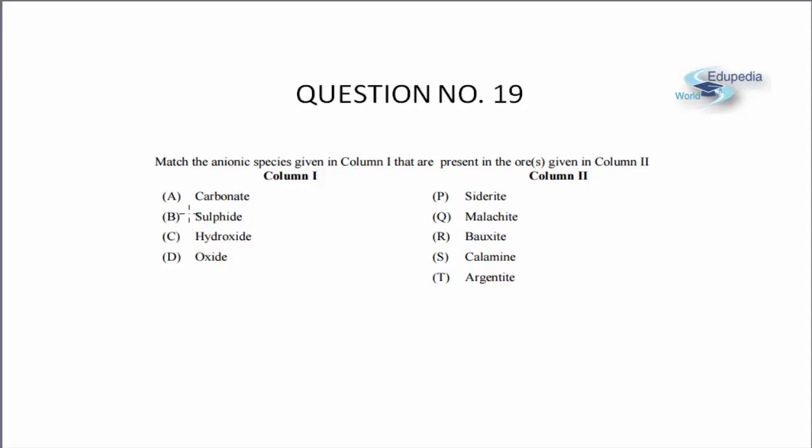In this question we have been given some anionic species in column 1 that is carbonate, sulphide, hydroxide, oxide and then we have been given the names of some ores. So to be able to solve this question you simply need to know which ore do these names represent.